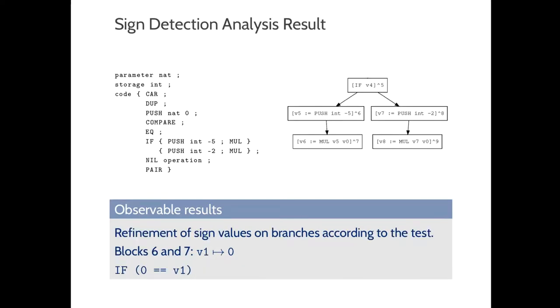We could design an analysis that refines the sign values on conditional branches according to the test. In this example, we can observe that in blocks 6 and 7, the true branch, the sign values of V1 must be 0, as the test corresponds to 0 equals V1.